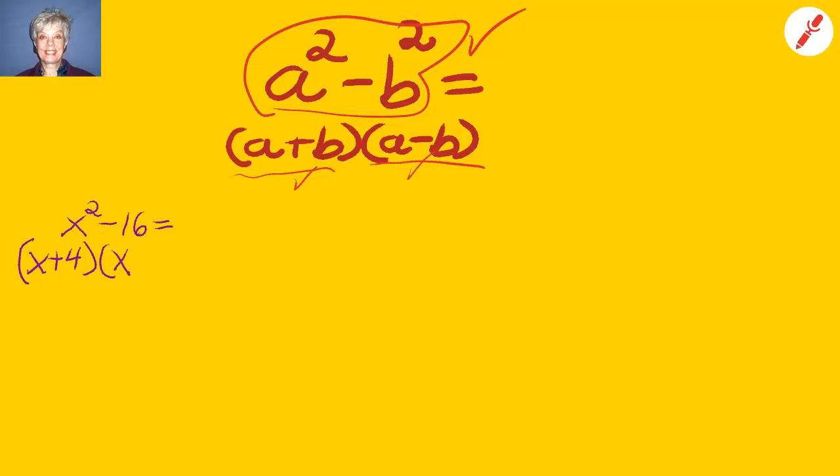Notice that x squared minus 16 equals x plus 4 times x minus 4. 4 is the square root of 16. x is the square root of x squared.